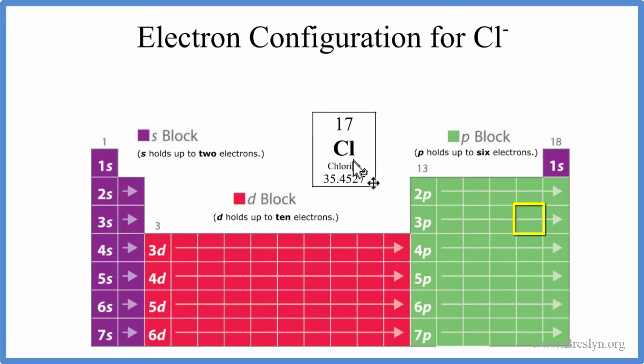So in a neutral element, the number of protons, this is the atomic number, it equals the number of protons. That equals the number of electrons. So we have 17 electrons to write the electron configuration for just chlorine, the neutral element.